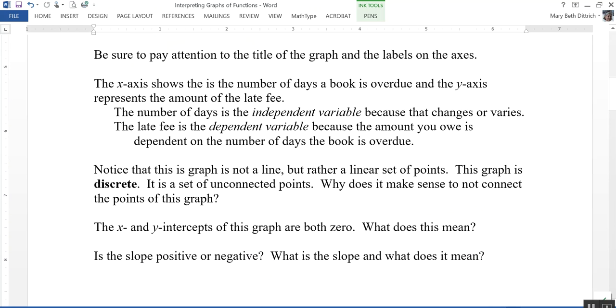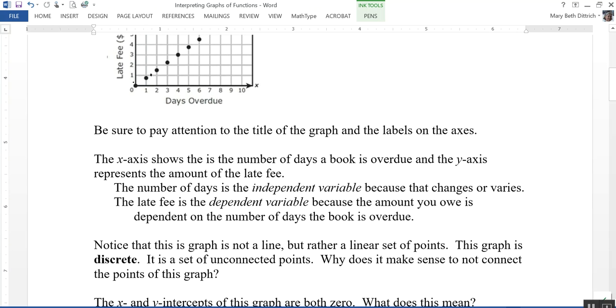The x and y intercepts of this graph are both zero, so that's kind of strange. It crosses the x-axis and the y-axis right here. Why is that? Well, because if your book is overdue zero days, you don't owe any money.